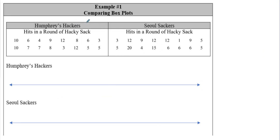For example one, we have two different sets of data: the Humphreys Hackers and the Soul Sackers, tracking how many hits in a round of hacky sack. We recorded 16 pieces of data from each team. This is where the calculator comes in handy — we want the five number summary from both data sets. Go ahead and get your calculator out. I'm going to use the TI-84 and reset the data: second plus seven, one, two, and restore defaults with second plus seven, two.